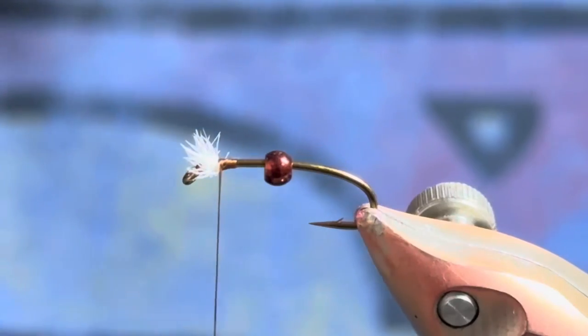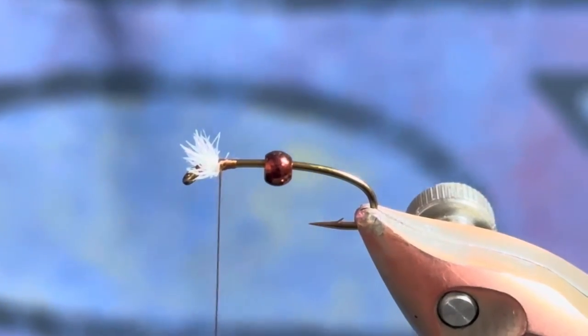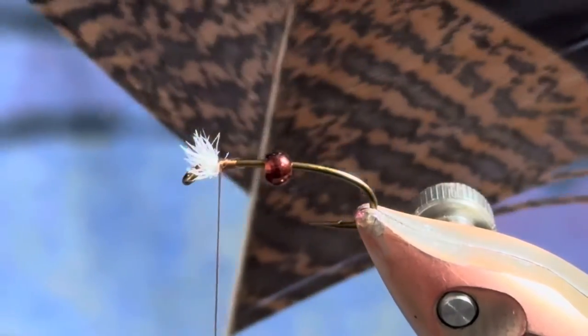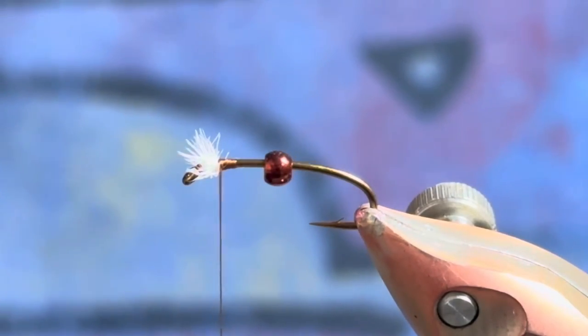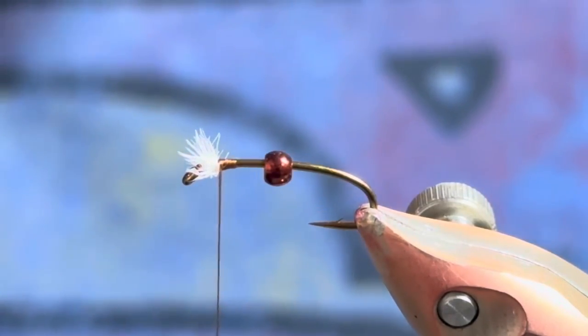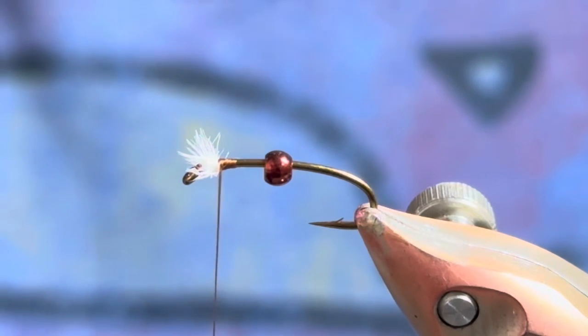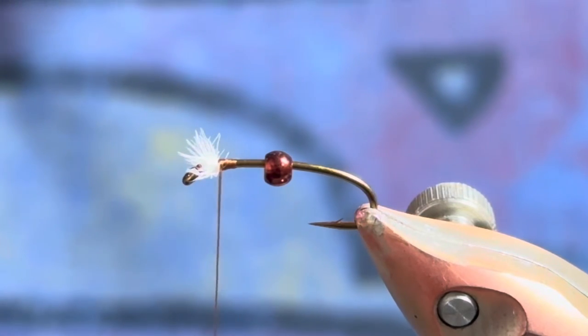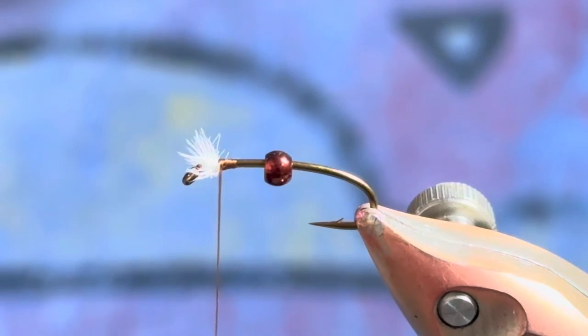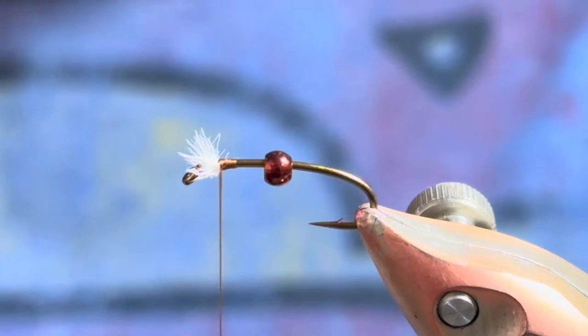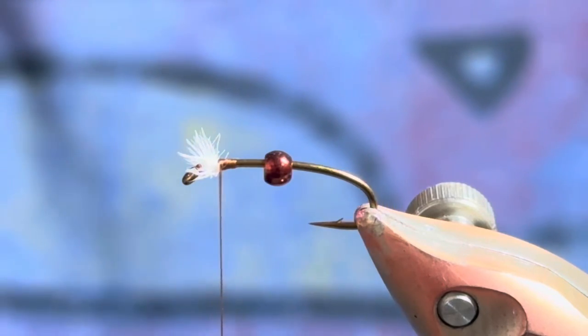If I flip it over you can see now most of that ostrich is up top. From there I've got a turkey feather, and you can use pheasant tail for this, or mallard or just about any kind of natural fiber.